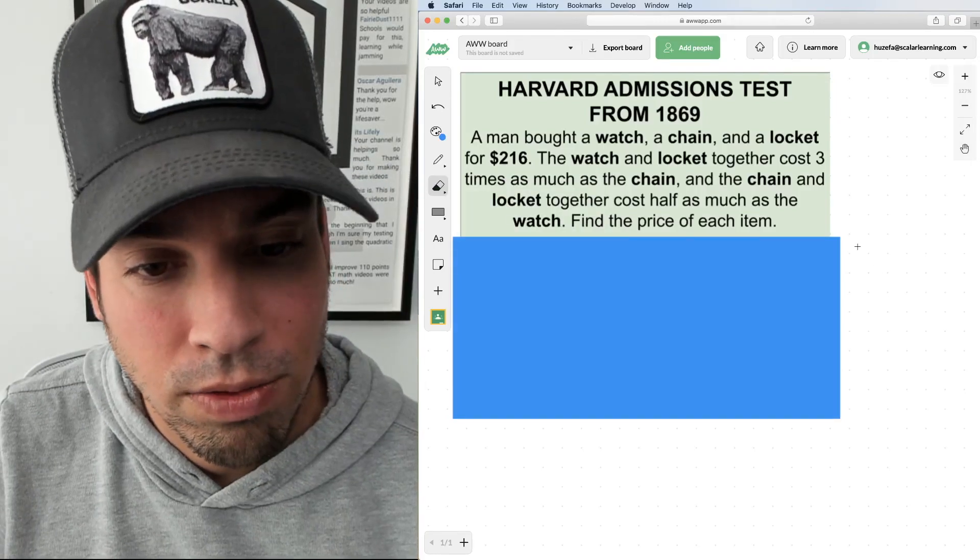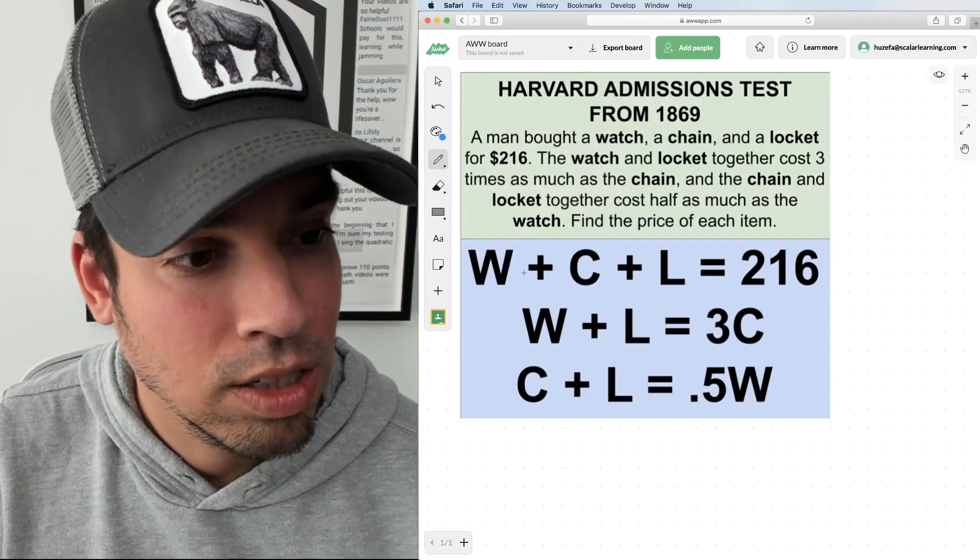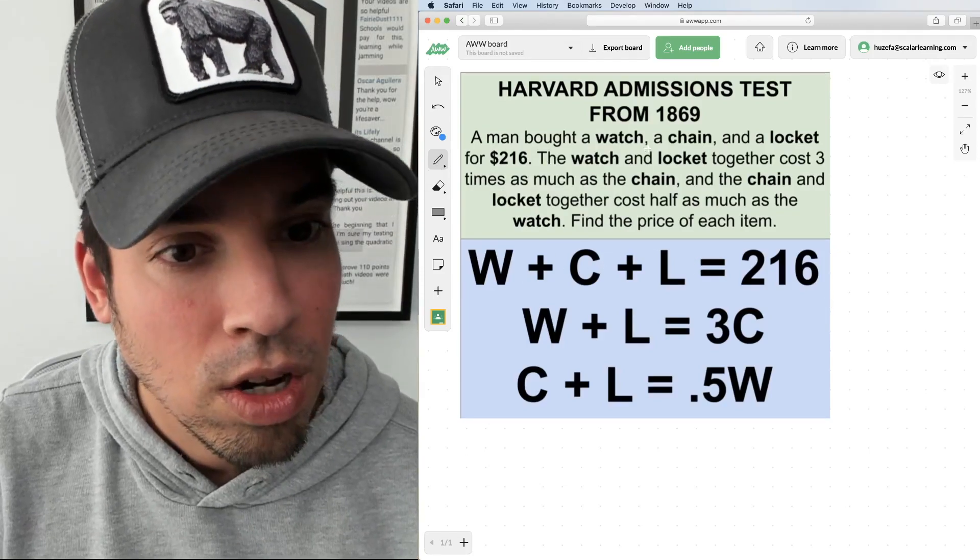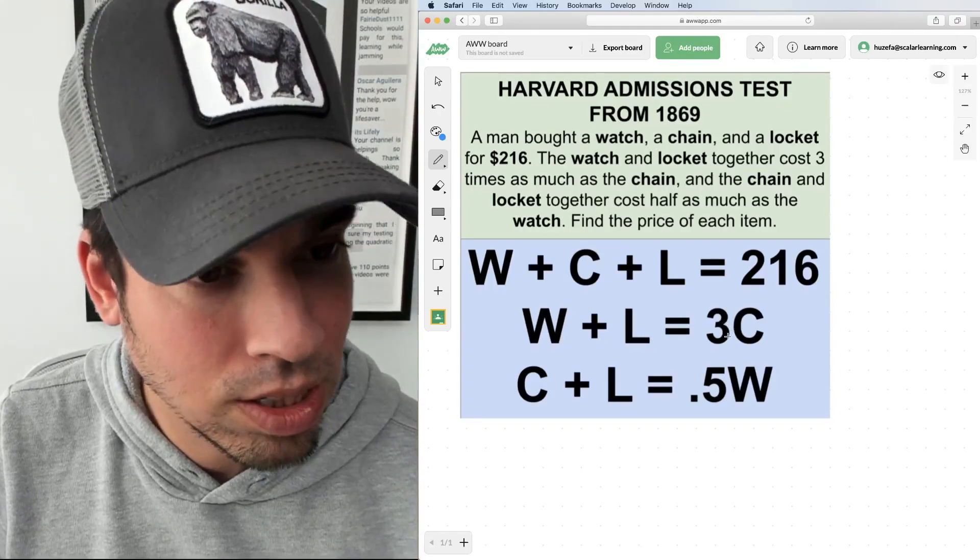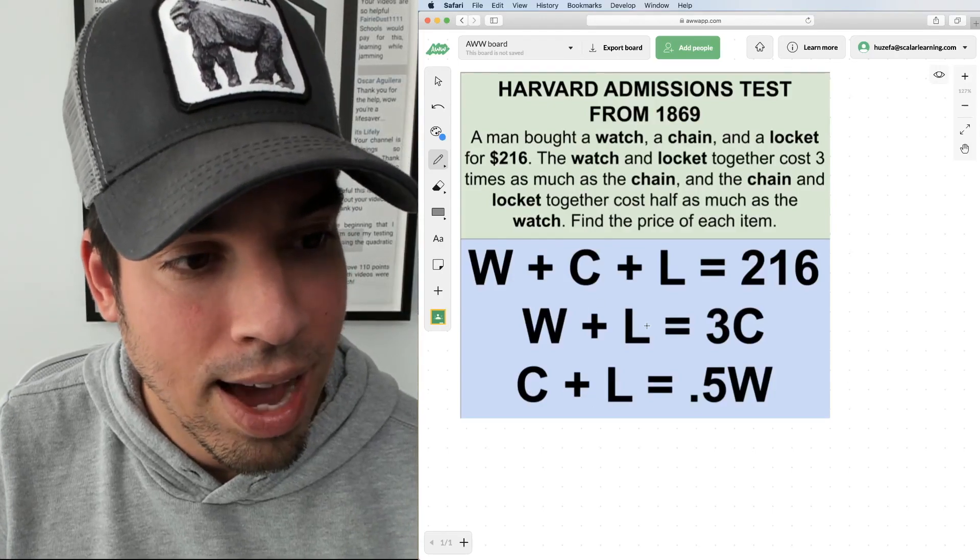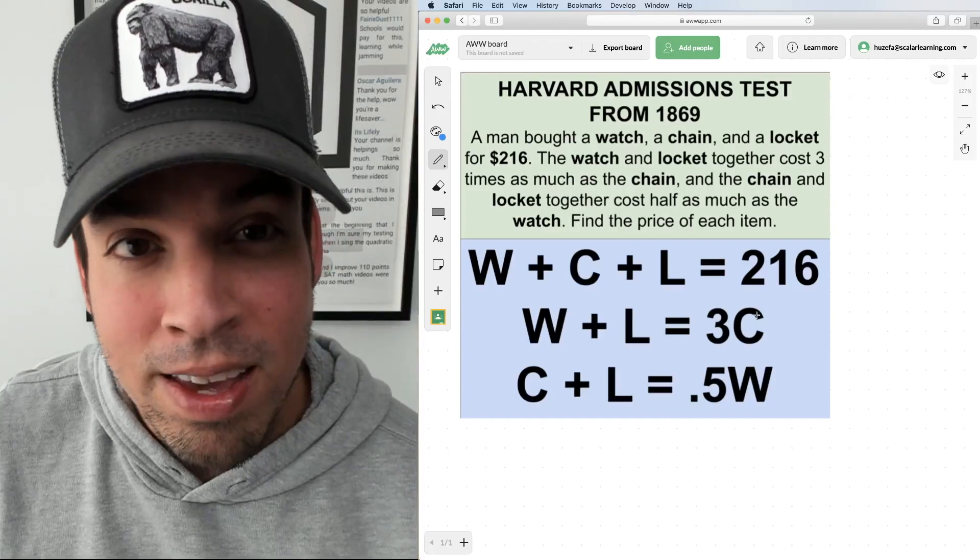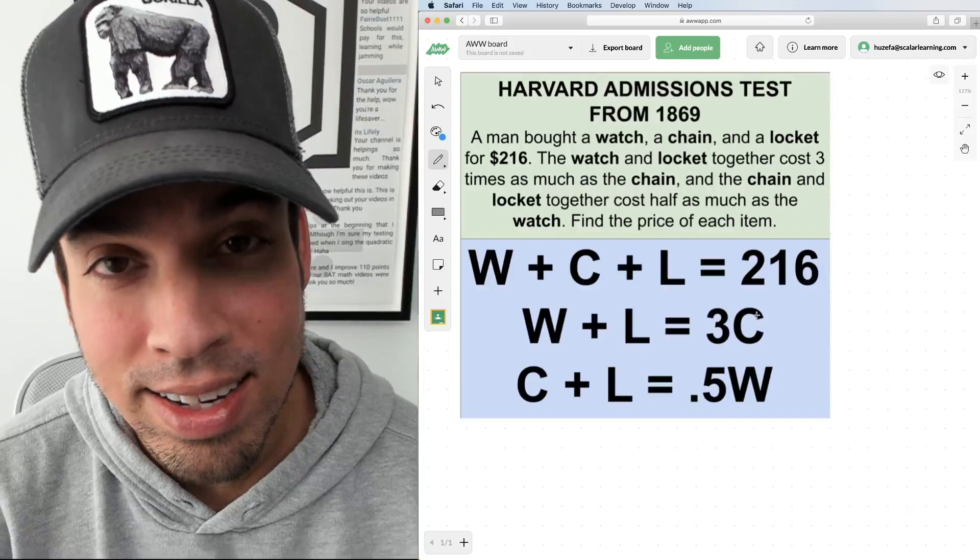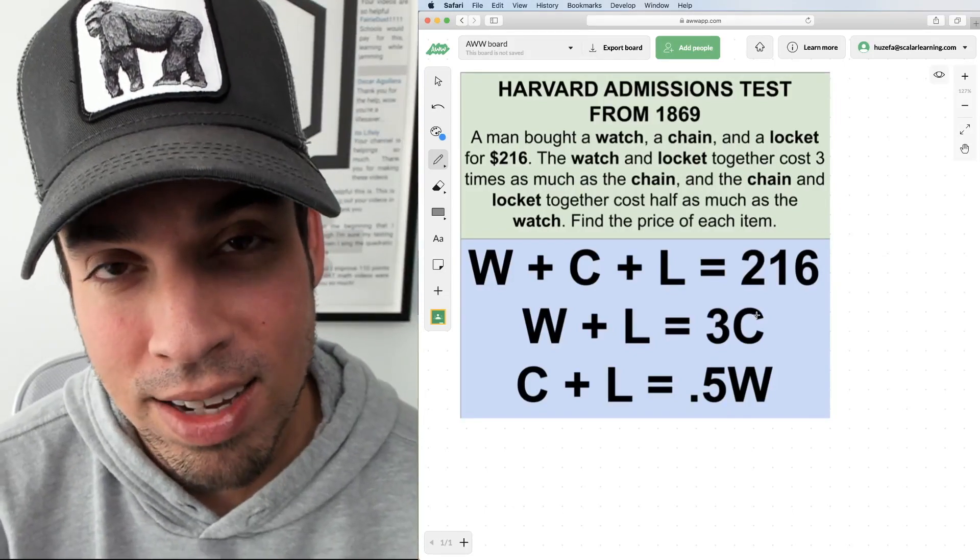We can actually convert this to the following system of equations: watch plus chain plus locket equals 216 dollars, watch plus locket equals three times the chain, and chain plus locket equals half the watch. Now you're ready to go. Go ahead and hit the pause button and see if you can figure it out.